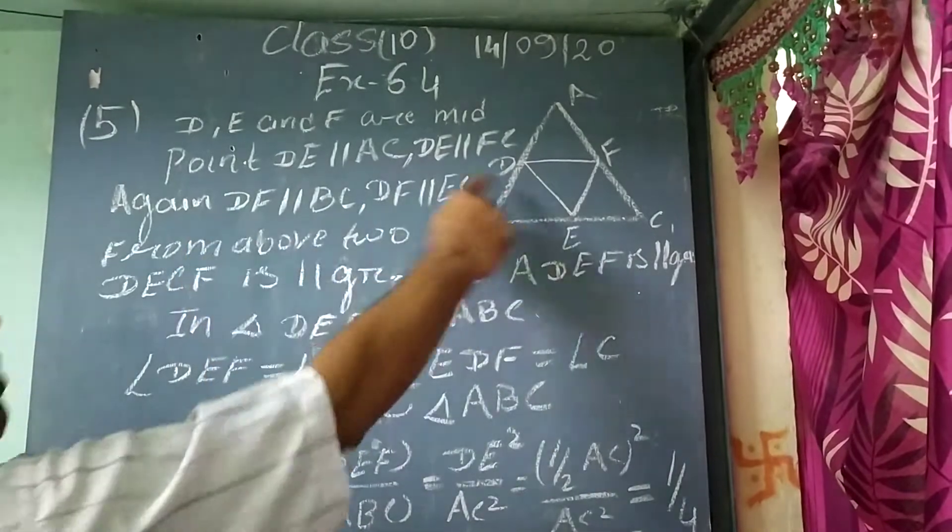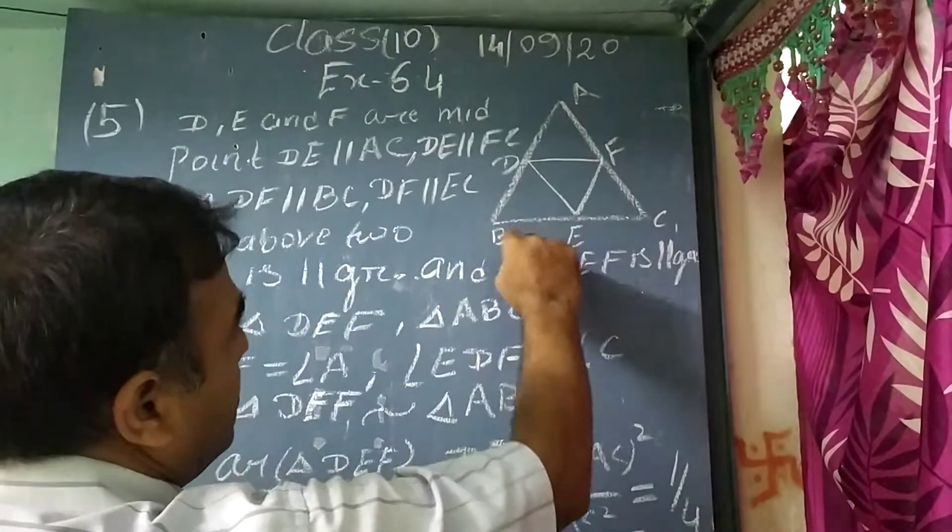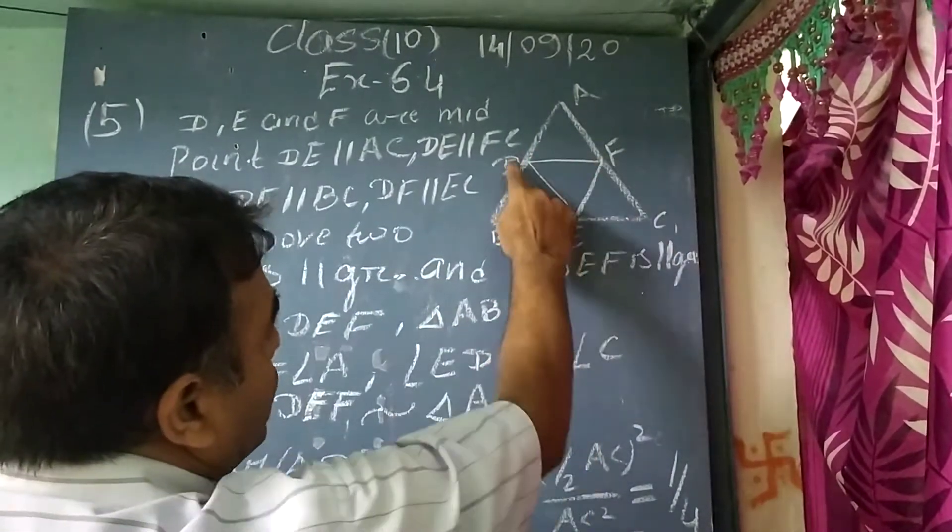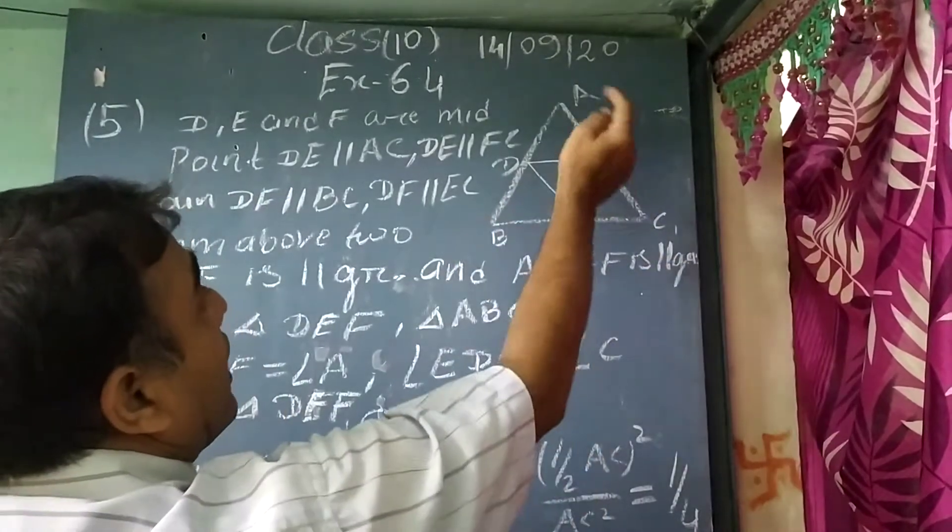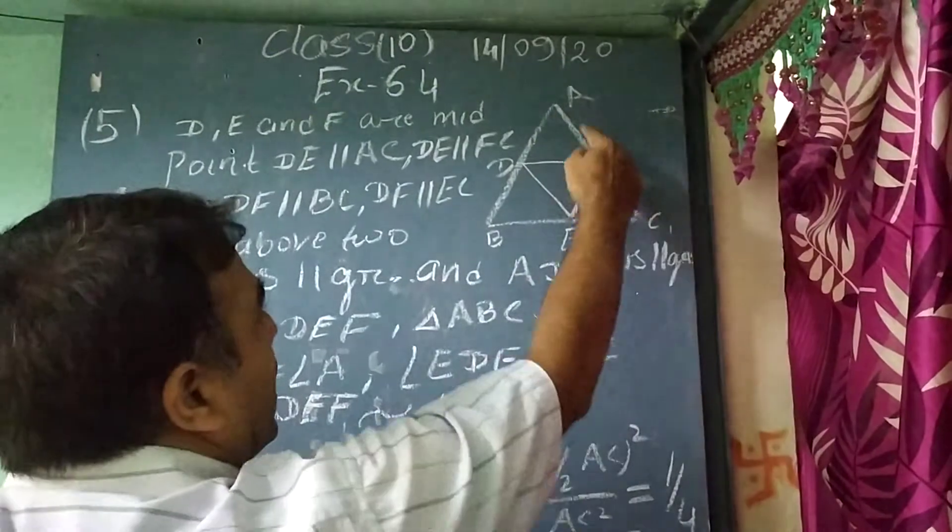As they are midpoints, by Thales theorem, that is, if they are midpoints, so DF is parallel to BC.